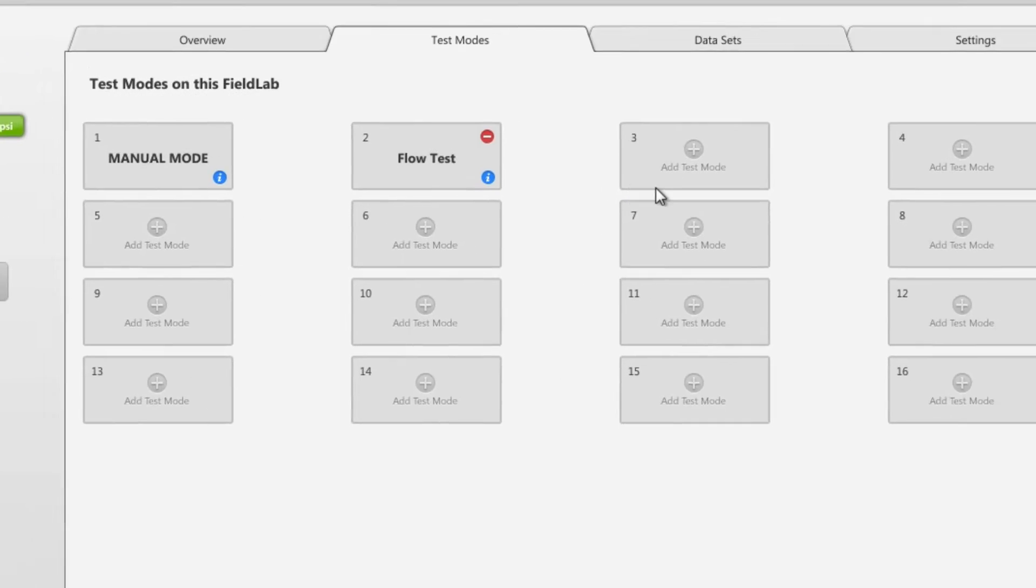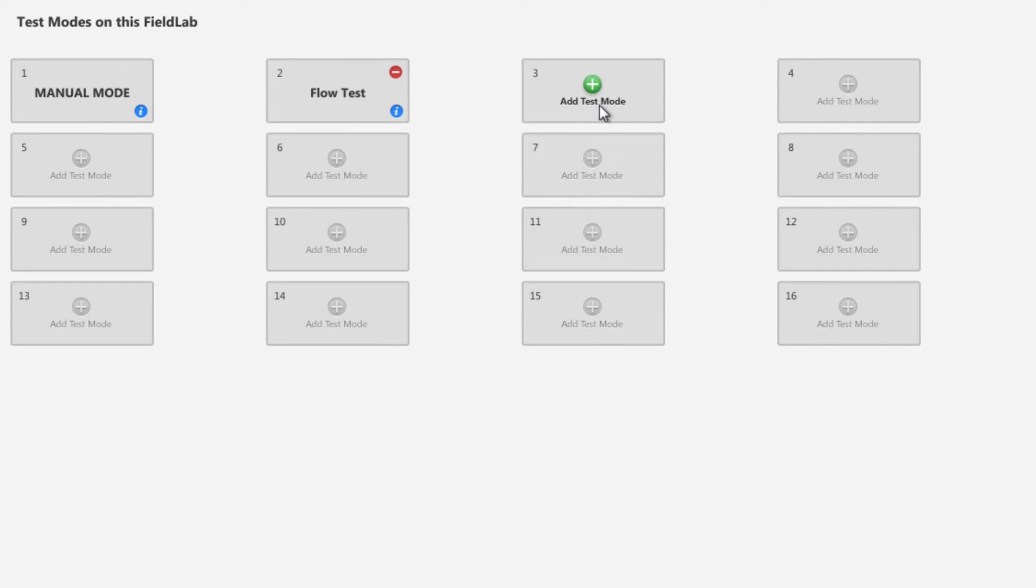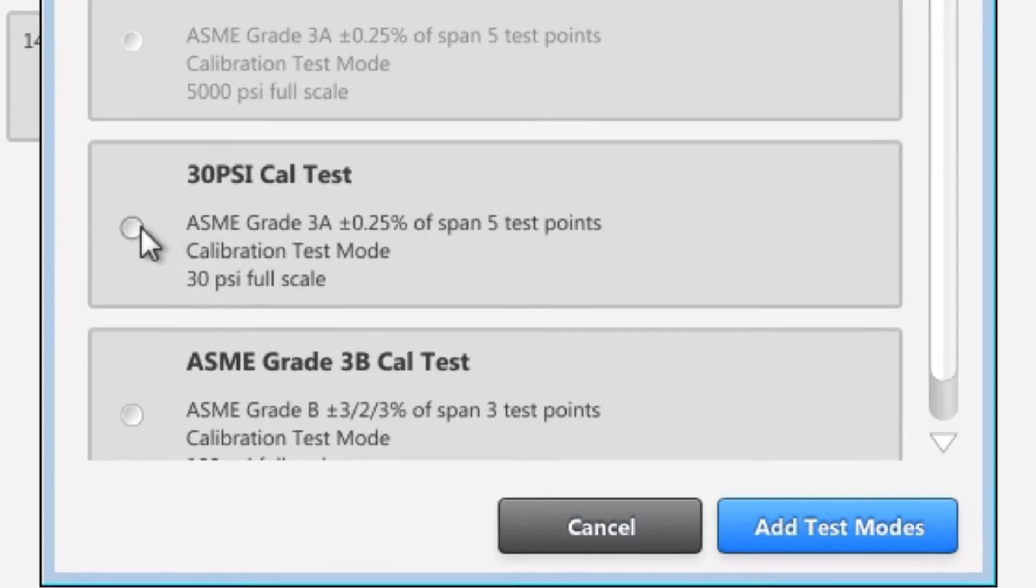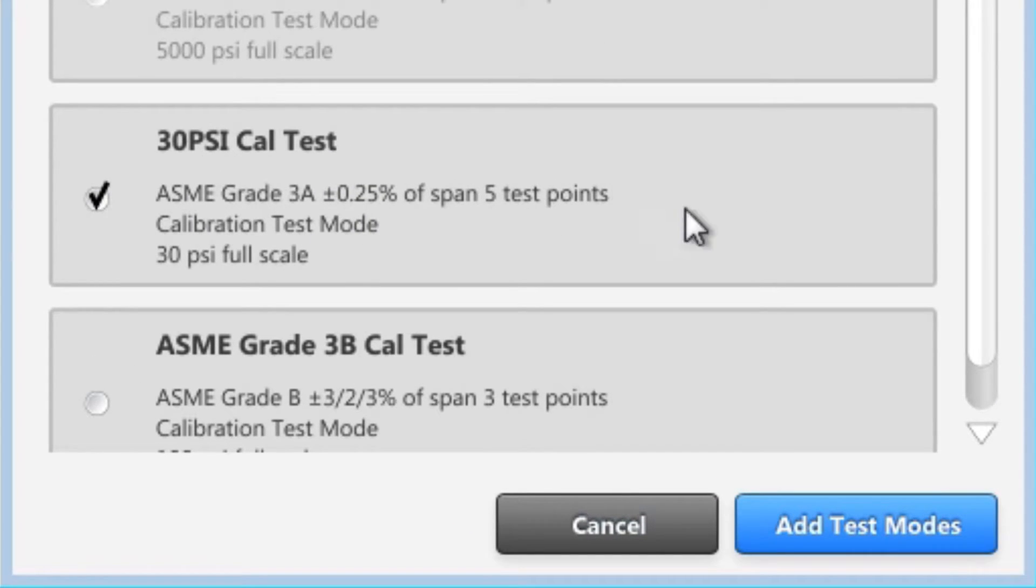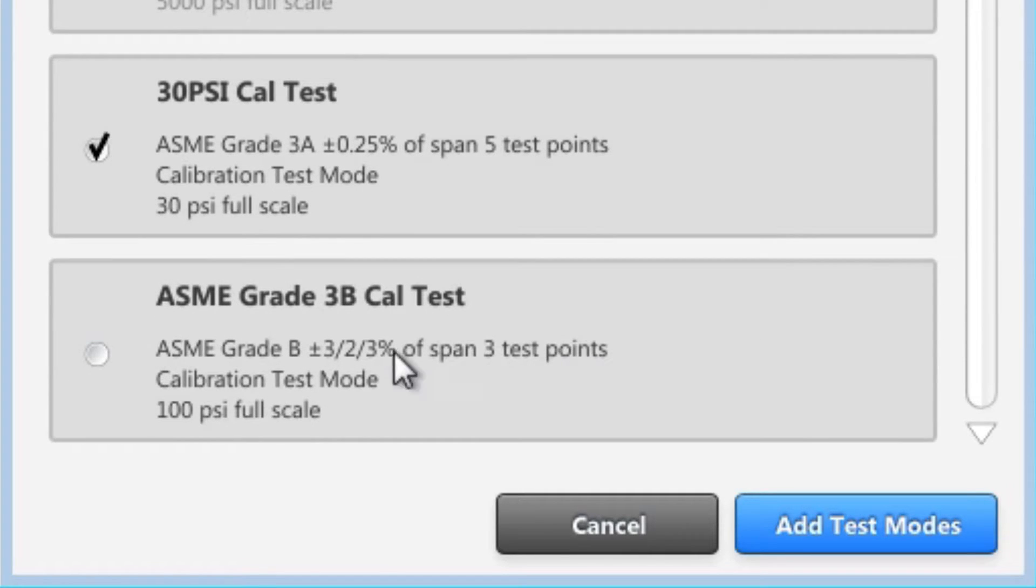We choose the next open spot on our test mode panel to add our test. We'll select our 30 PSI CalTest that we just created, and any others that we want to add, up to a total of 15 test modes, in addition to the default manual mode, which cannot be removed.